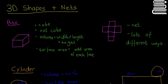First we're going to look at a box — it can be a cube or not a cube. A cube has every side the same; when it's not a cube, not every side is the same. The volume is width by length by height. The surface area is the area of each face added together — so faces 1, 2, 3, 4, 5, 6 — just the area of all the squares added together.